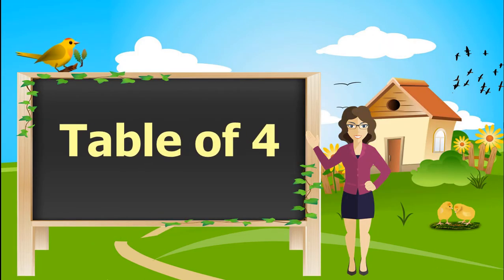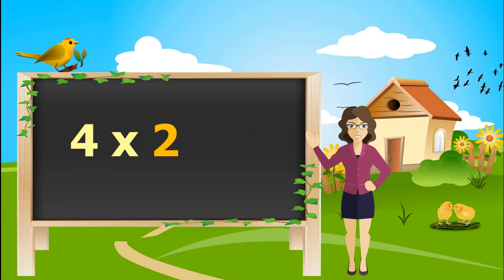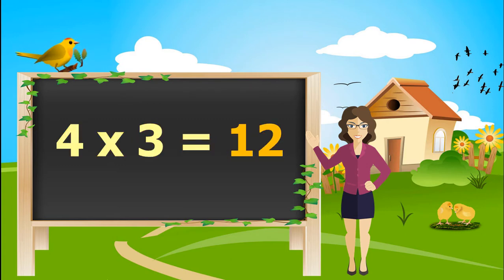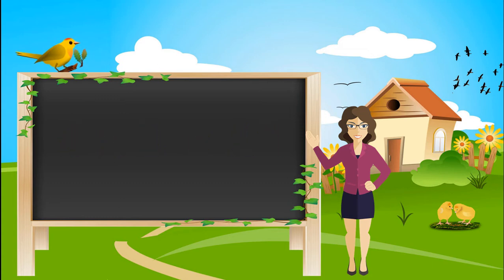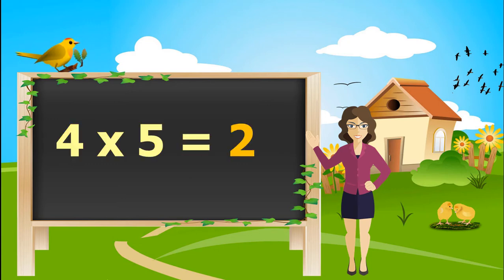Let's learn table of 4. 4 ones is 4. 4 twos are 8. 4 threes are 12. 4 fives are 20.